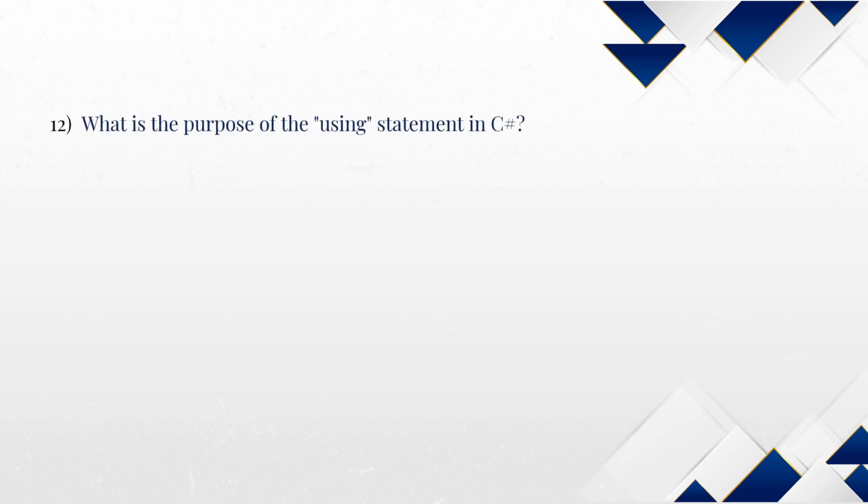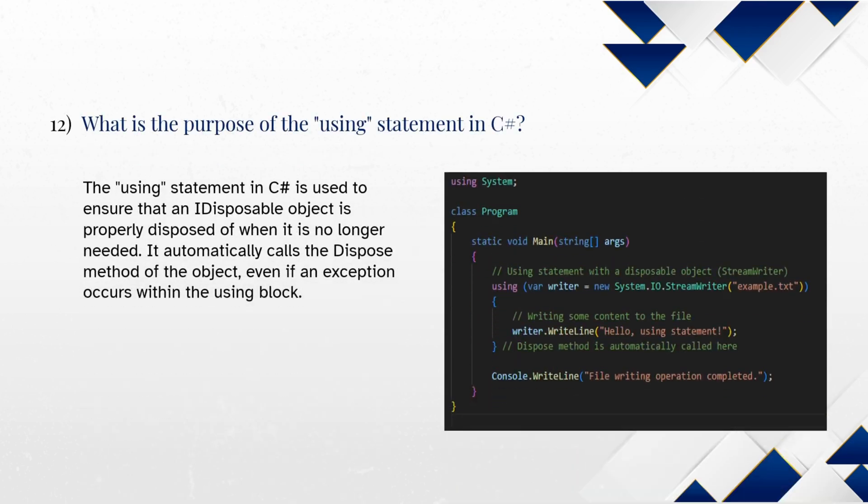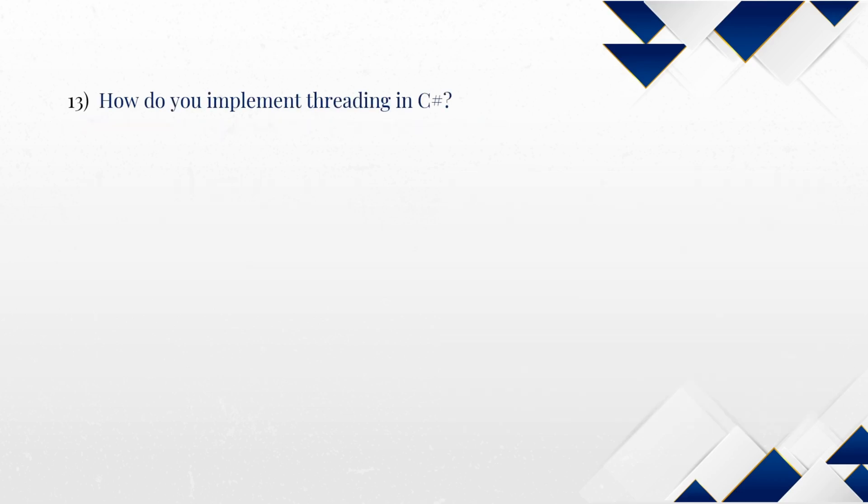What is the purpose of the using statement in C-Sharp? The using statement in C-Sharp is used to ensure that an IDisposable object is properly disposed of when it is no longer needed. It automatically calls the dispose method of the object even if an exception occurs within the using block.